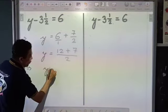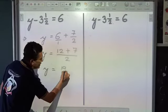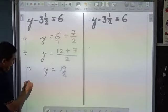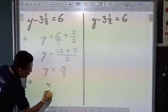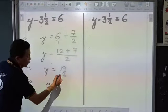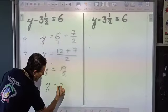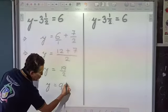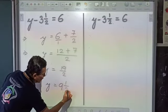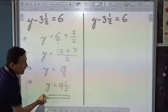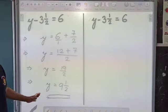So I get y is equal to 19 upon 2. And 19 upon 2, if I convert it into a mixed fraction, will be equal to 2, 9 is 18, which means 1 is the remainder upon 2. So 9 and a half is my final answer.